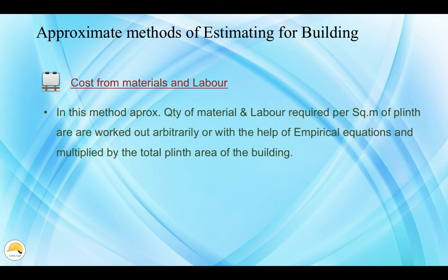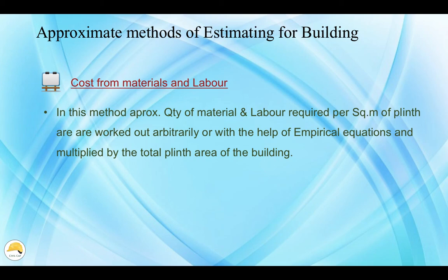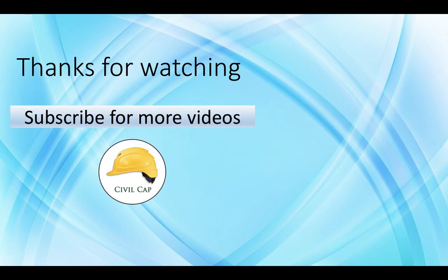The next method is cost from materials and labor. In this method, we calculate how many materials and labor are used using a formula. We multiply the materials and labor to get the total quantity. This empirical formula is recommended by the Central Building Research Institute — this method is called CBRI. This covers building estimation and approximate estimation. In this video, we found out about approximate estimate methods. This is a simple introduction.